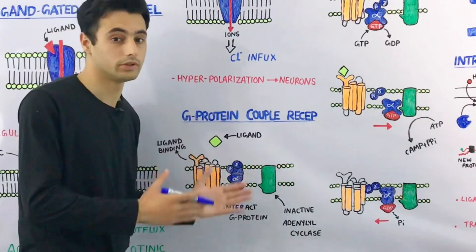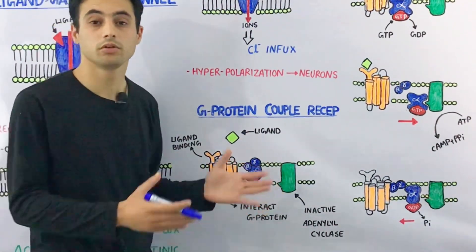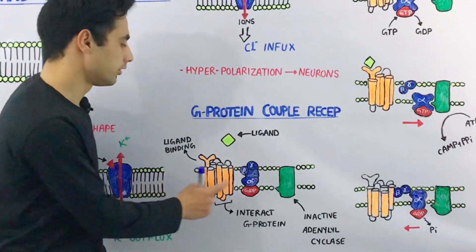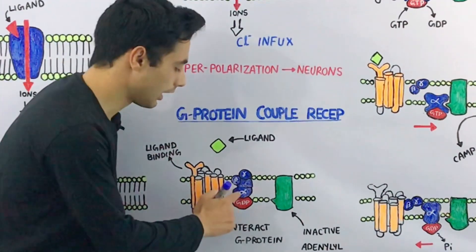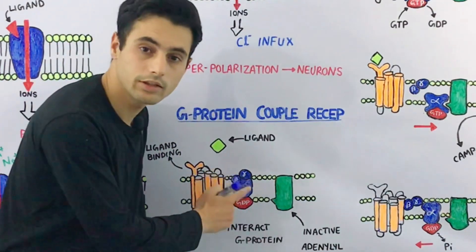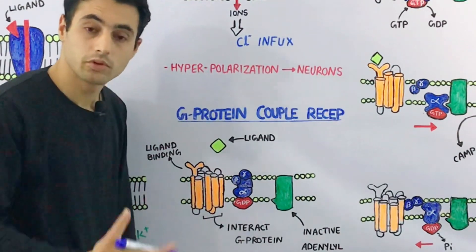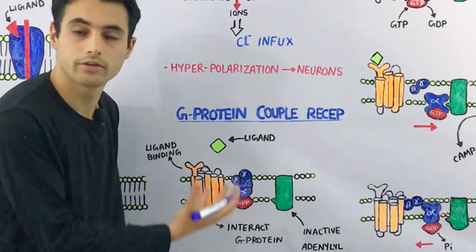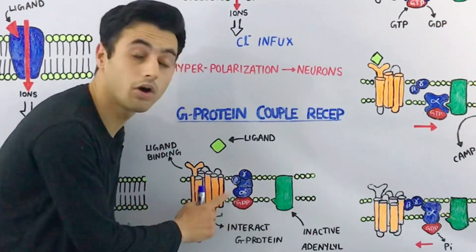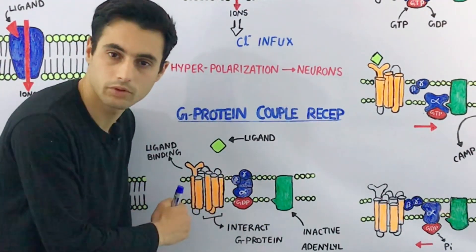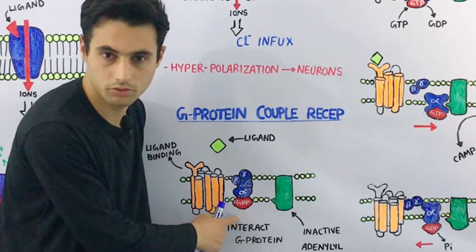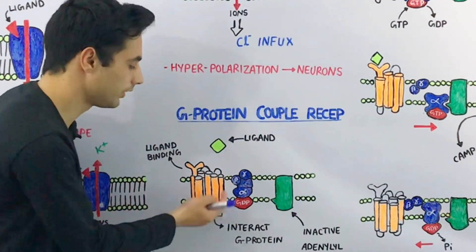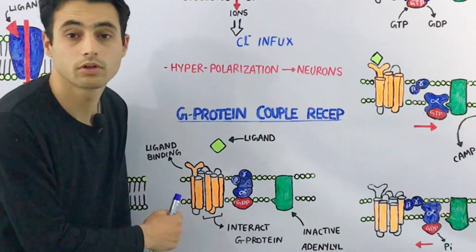Now let's learn about the G-protein coupled receptors — how these receptors perform their action when a drug binds with them. This topic is very similar to normal physiology and endocrinology. The G-protein has three subunits: the alpha subunit, the beta subunit, and the gamma subunit. The gamma and beta subunits will anchor this G-protein into the cell membrane, while the alpha subunit is attached with GDP, also known as guanosine diphosphate.